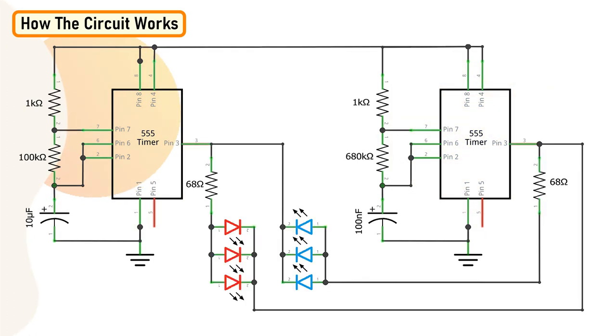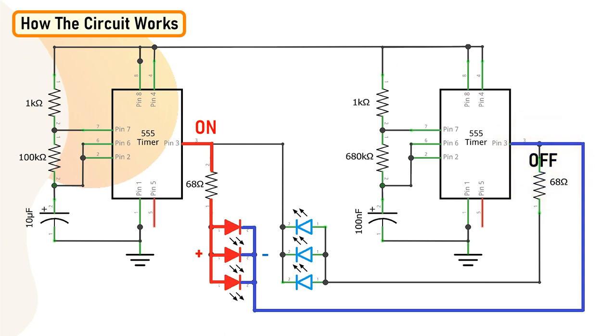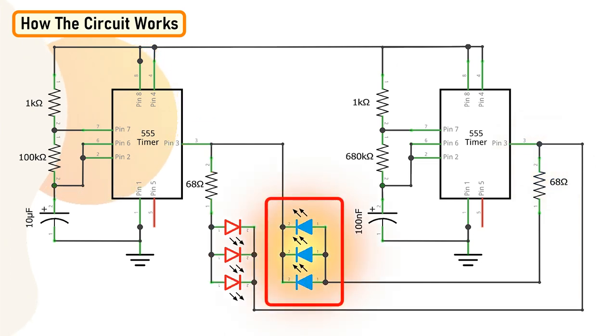So pretty much that's exactly what we want. The first 555 timer IC will help us in toggling between the LED clusters and the second 555 timer IC will produce the strobe light effect. Now let's connect the LEDs to this cluster. The first LED cluster of the red LEDs turn on when the anode receives a positive voltage and the cathode is grounded. This happens when the output of the first 555 timer IC is on and at the same time the output of the second 555 timer IC is off. Similarly, the second cluster of blue LEDs turn on only when the output of the first 555 timer IC is off and the output of the second 555 timer IC is on.